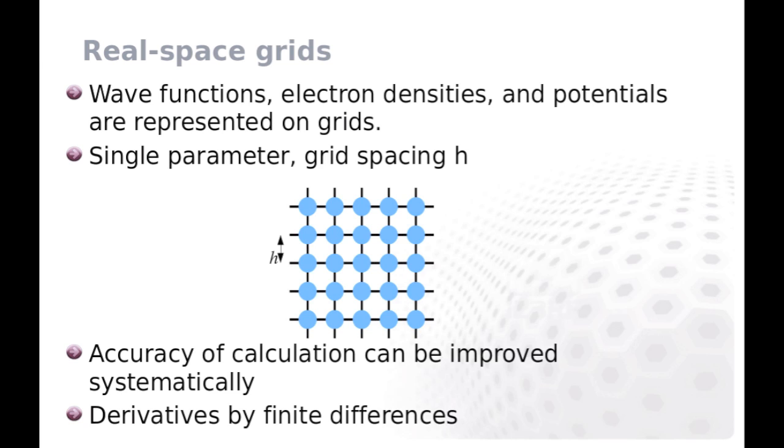Let's discuss next the various basis sets included in GPAW and start with uniform real-space grids. Here all the physical quantities such as wave functions, electron densities, and potentials are represented by values at grid points. There is a single parameter, the grid spacing, which determines the accuracy of discretization, and the accuracy can be improved systematically by decreasing the grid spacing.